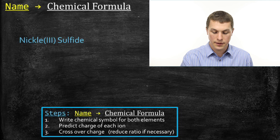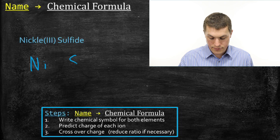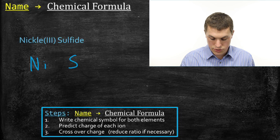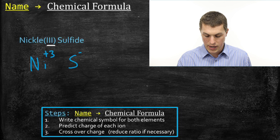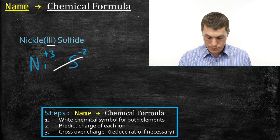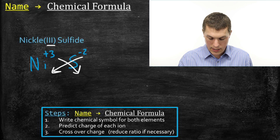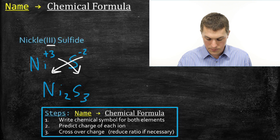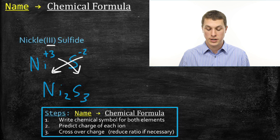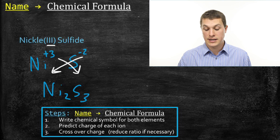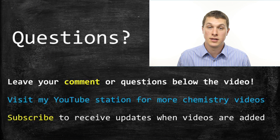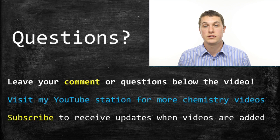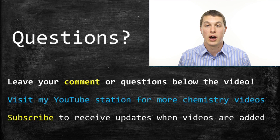Last example: nickel(III) sulfide. We find the chemical symbol for nickel and sulfide — Ni and S from the periodic table. Our charge on nickel is given directly by the Roman numerals: plus three. The charge on sulfide from its position on the periodic table is minus two. We cross over those charges to get Ni₂S₃. We can't reduce a two-to-three ratio — that's the simplest whole number ratio. So nickel(III) sulfide is Ni₂S₃. That does it for naming ionic compounds with metals in and out of the D block. If you have any further questions, ask them below or visit my channel for other chemistry videos.